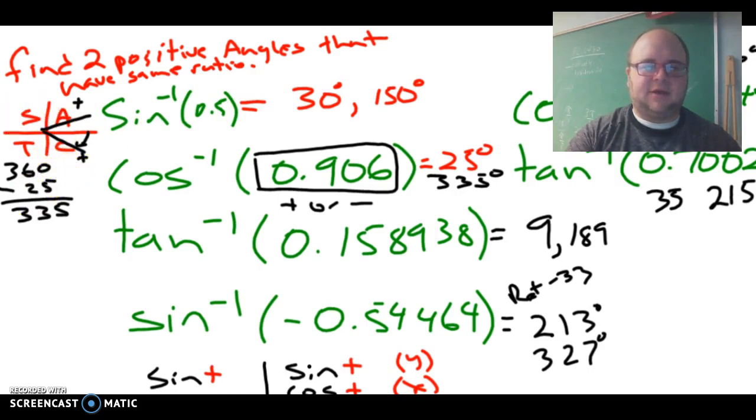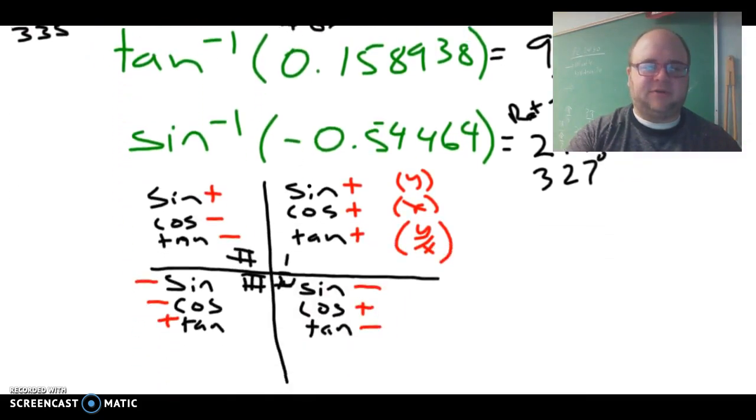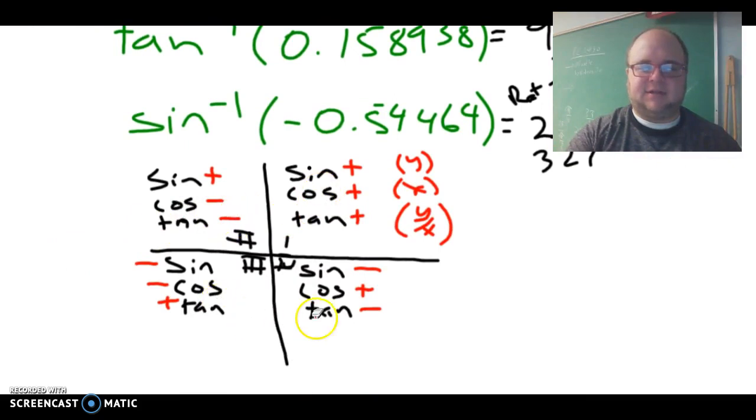We looked at All Students Take Calculus and made a little chart. Sine and cosine are positive in quadrant 1, which makes tangent positive. Sine is positive in quadrant 2, cosine is negative there, and that makes tangent negative because a positive divided by a negative is negative. Two negatives in quadrant 3 make tangent positive, and a positive and a negative in quadrant 4 makes it negative.